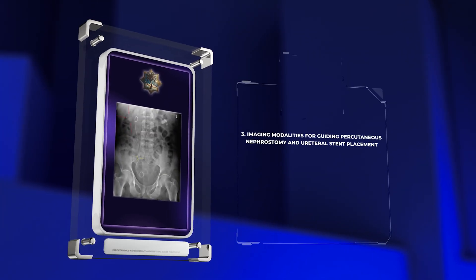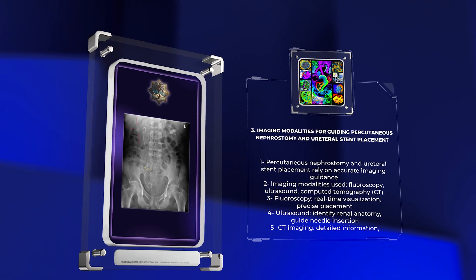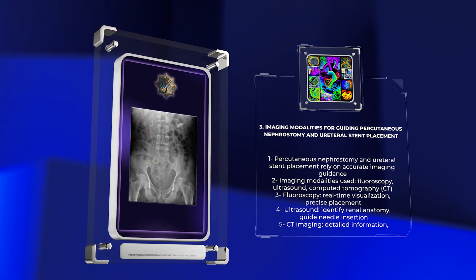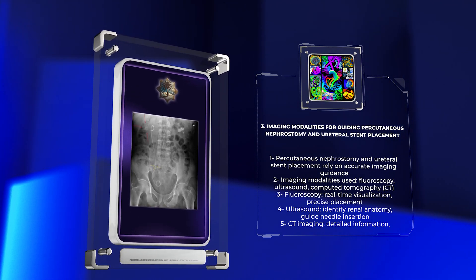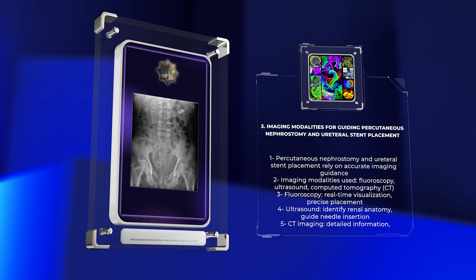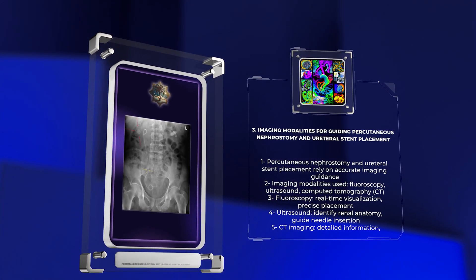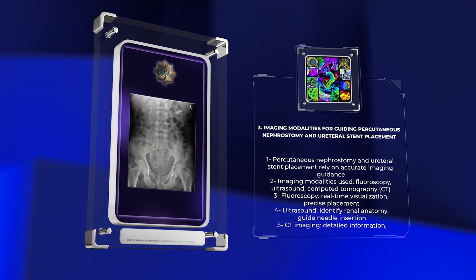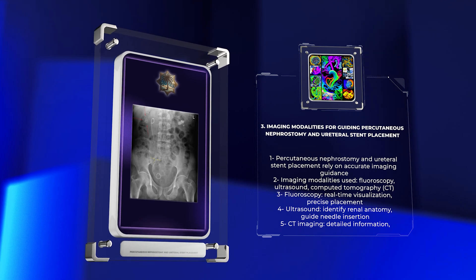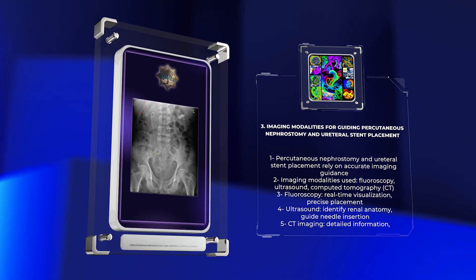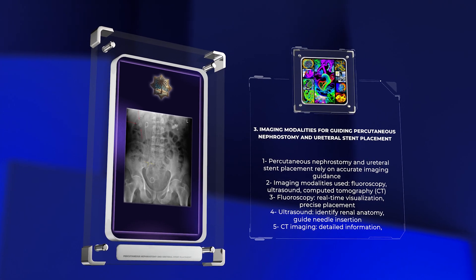The success of percutaneous nephrostomy and ureteral stent placement relies heavily on accurate imaging guidance. Various imaging modalities are used to guide these procedures, including fluoroscopy, ultrasound, and computed tomography (CT). Fluoroscopy provides real-time visualization of the needle and catheter during the intervention, allowing precise placement. Ultrasound imaging aids in identifying the renal anatomy and helps guide needle insertion into the renal pelvis. CT imaging offers detailed anatomical information, helps identify the cause of obstruction, and assists in planning the optimal intervention approach.